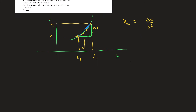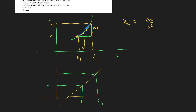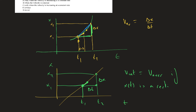When x of t is a straight (rectilinear) line, the slope is constant regardless of how close two points are. The instantaneous velocity equals the average velocity because the slope delta x divided by delta t is always the same everywhere on a linear graph. So V-instantaneous equals V-average when x of t is a linear function of t.